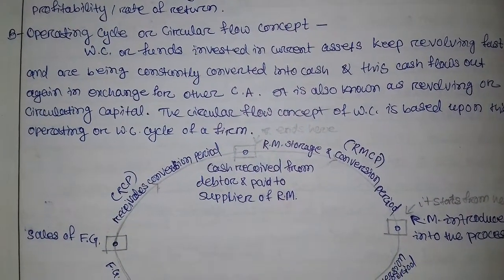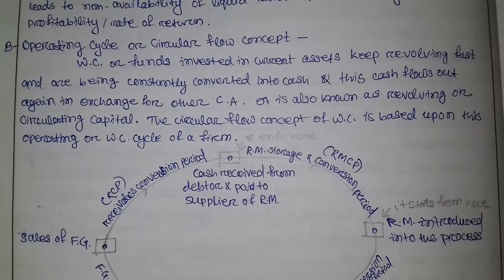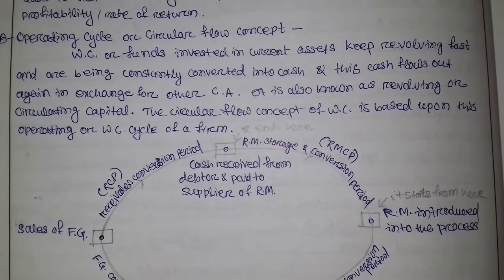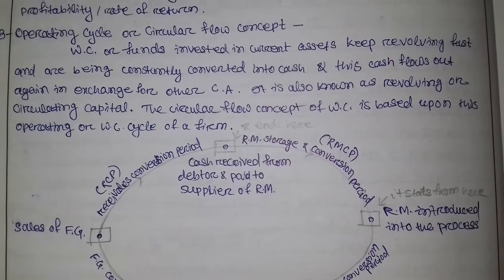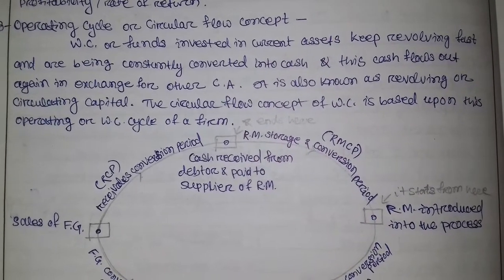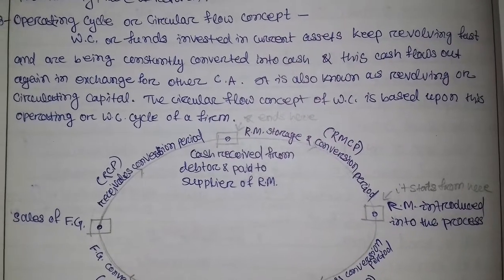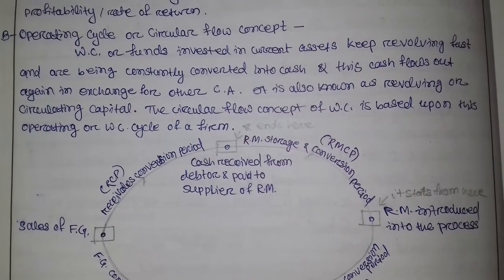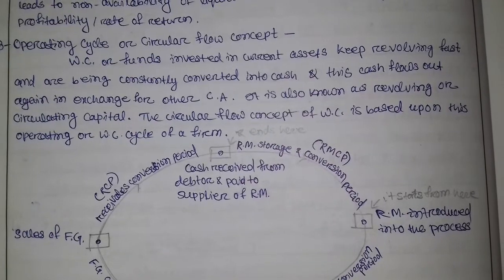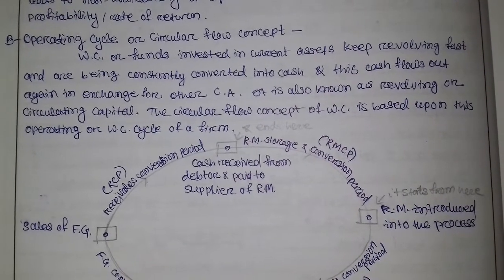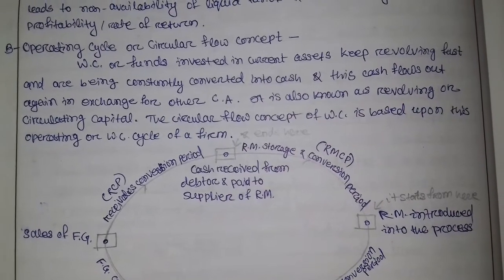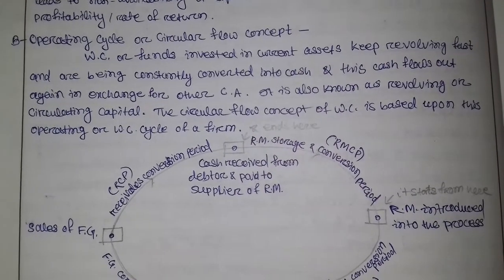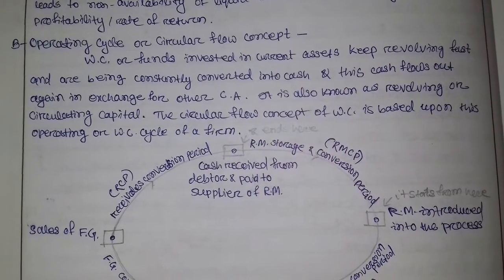The second concept is the operating cycle, also called the circular flow concept. The concept is that funds a company has invested in current assets or working capital will revolve — those current assets keep revolving fast and are constantly being converted into cash.